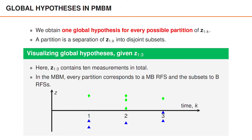Hopefully, these illustrations have given you an idea about what the global hypotheses represent and that the number of hypotheses grows quickly. In fact, the number of hypotheses grows as the Bell number of the total number of measurements, which means that it grows extremely quickly. We need techniques to limit the number of hypotheses to a reasonable level.